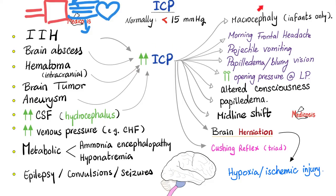If intracranial pressure is high, what happens? Macrocephaly in infants, because the skull sutures have not fused yet and increased pressure expands skull size — these babies have very big heads. Headache — but a special type: frontal headache that gets worse when you lean forward and is worse in the morning. Projectile vomiting. Papilledema and blurry vision. Increased opening pressure on lumbar puncture. Altered consciousness. Abnormal gait. Midline shift on neuroimaging. Sometimes abducens nerve palsy — the answer to why the abducens is specifically affected is in my abducens nerve video in my neuroanatomy playlist. Intracranial pressure affecting the brainstem can lead to Cushing reflex: a triad of hypertension, bradycardia, and irregular breathing.